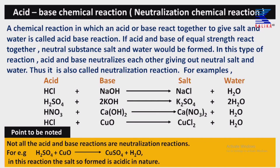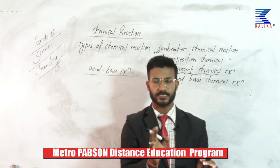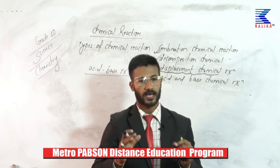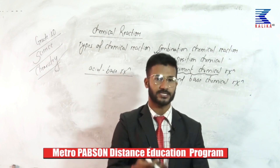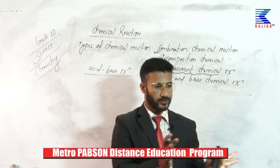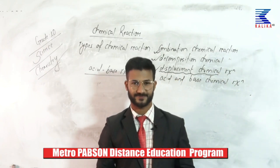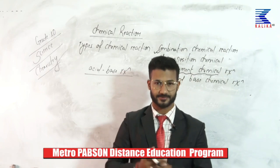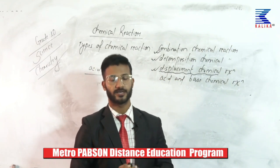Acid-base reaction is also called neutralization chemical reaction. This is because acid and base are both corrosive substances. When a strong acid is allowed to react with a strong base of equal strength, they neutralize each other's effect and the result would be neutral substances — non-acidic and non-basic. Since neutral substances are formed, it is called a neutralization chemical reaction.